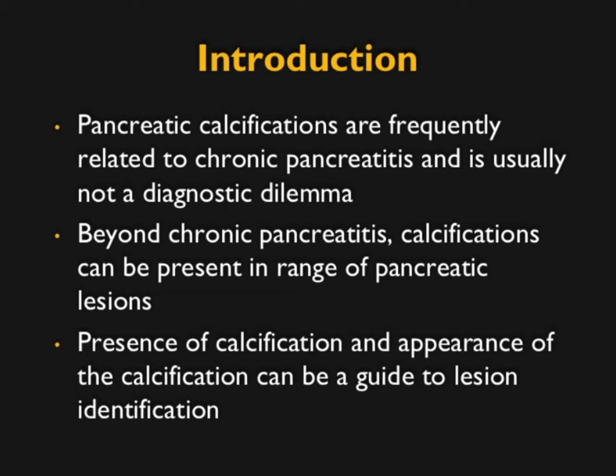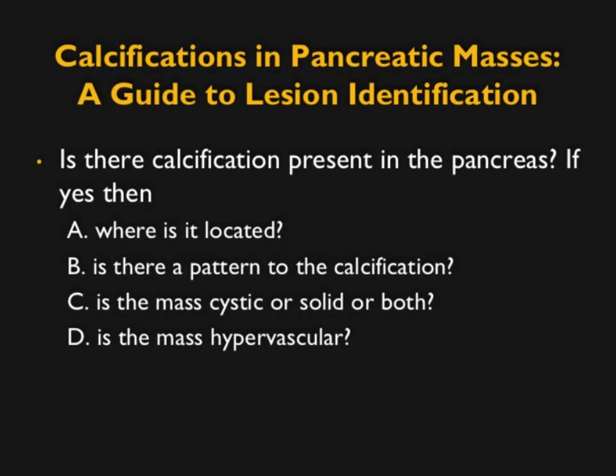In our app on pancreatic masses, we ask: is calcification present in the pancreas? If yes, where is it located? Is there a pattern? Is the mass cystic, solid, or both? Is the mass hypervascular? A hypervascular lesion with calcification suggests neuroendocrine tumor. A cystic lesion with central calcification suggests serous cystadenoma. A cystic lesion with rim calcification under 3 cm suggests IPMN.